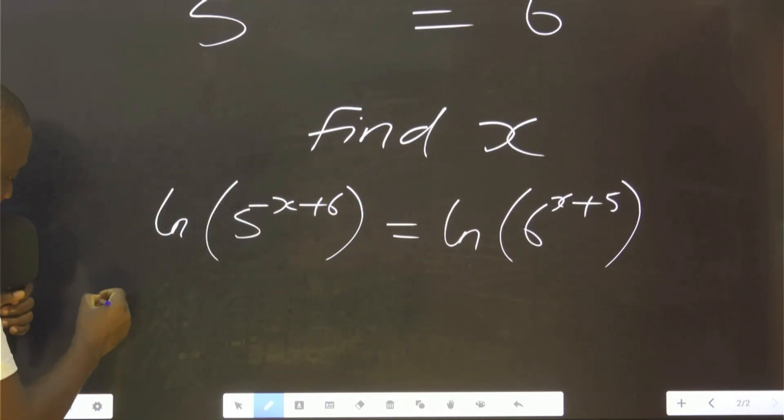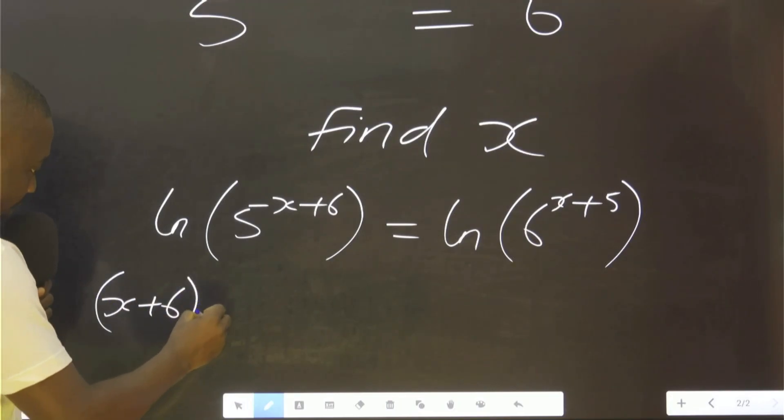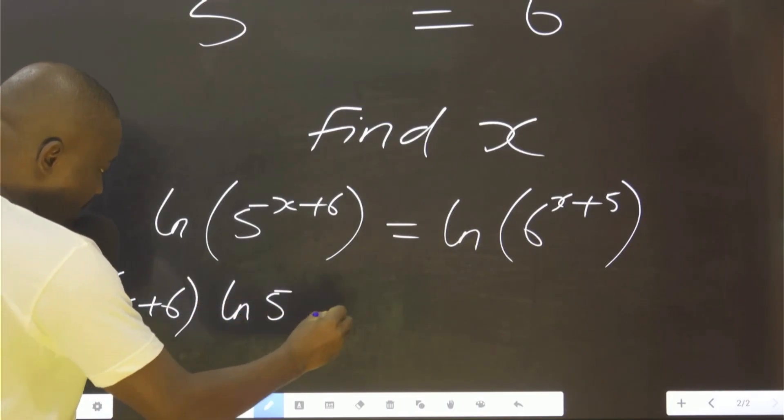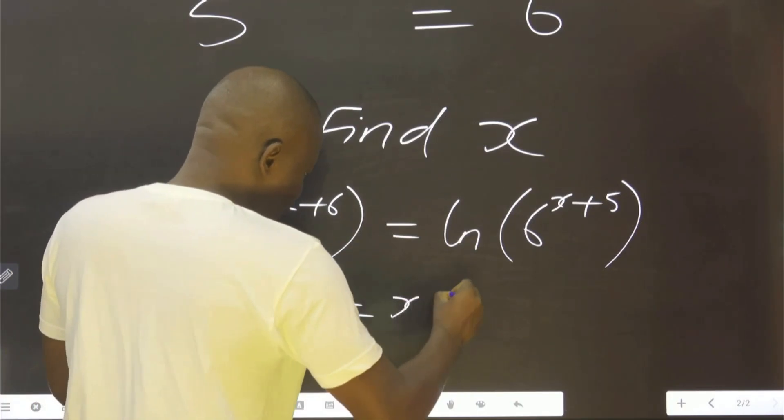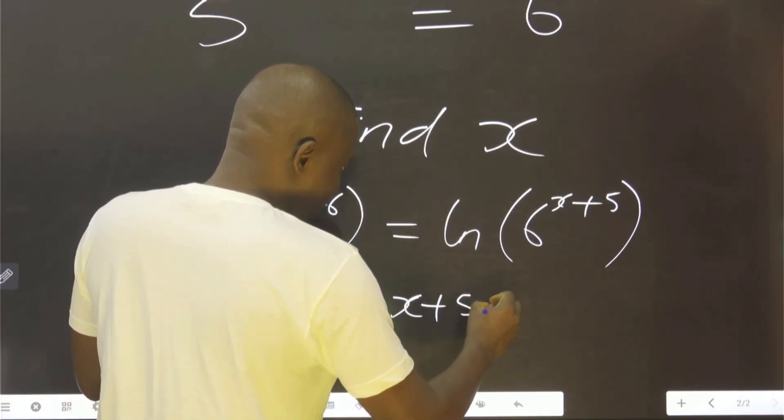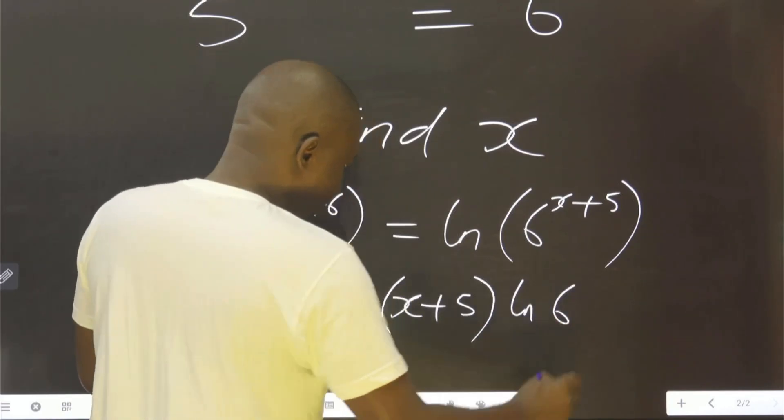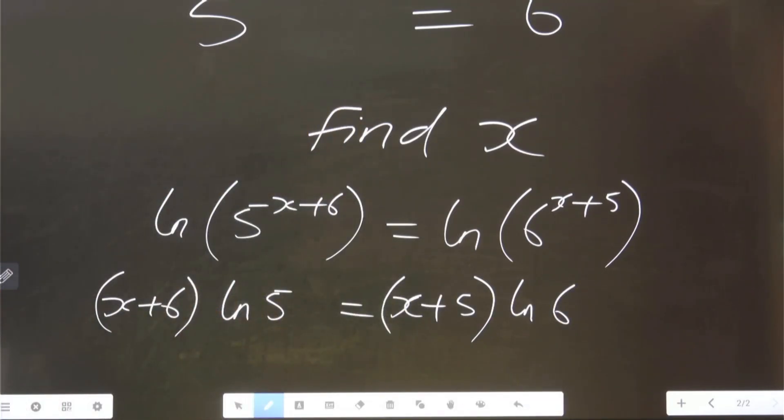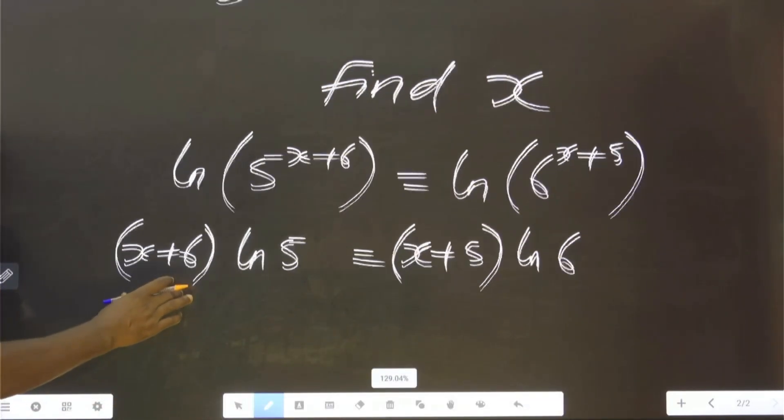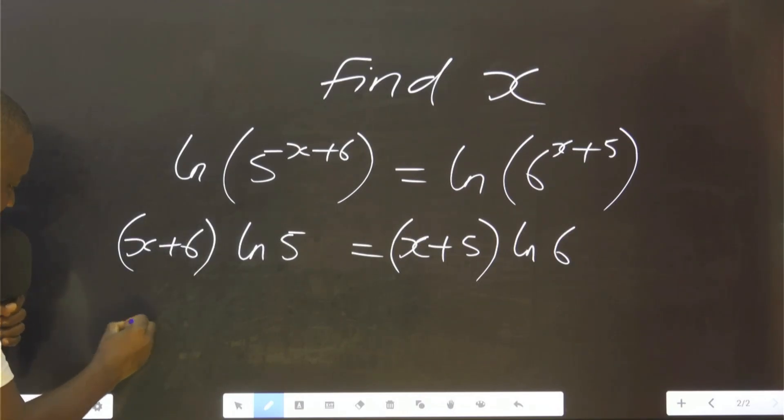If we use the property of logarithm, this will come back here. That is x plus 6 is equals to x plus 5. Okay? Then we expand this. If we expand this, we have x.